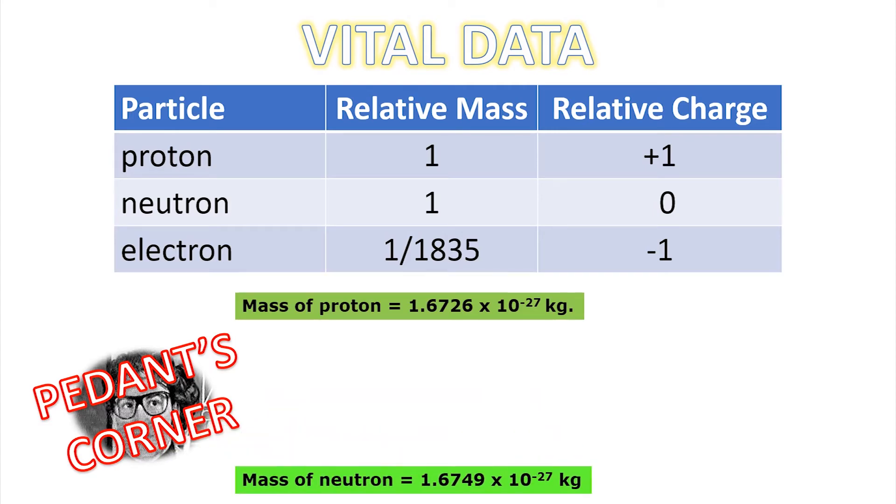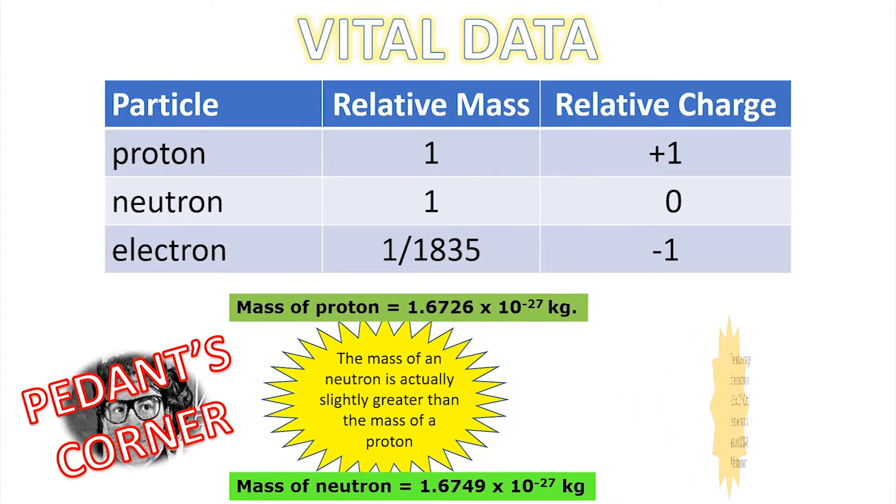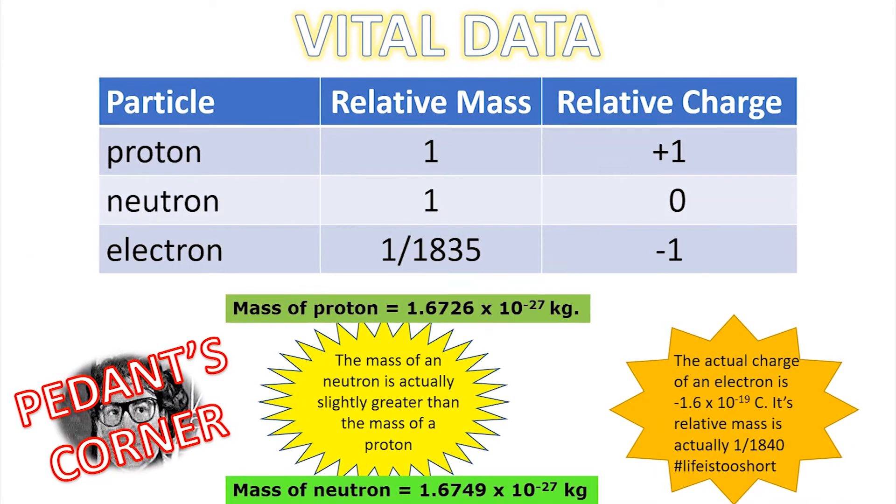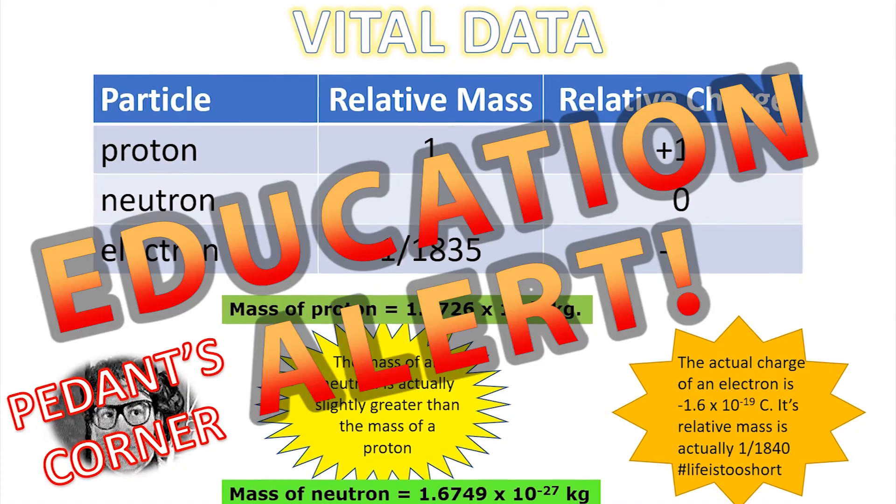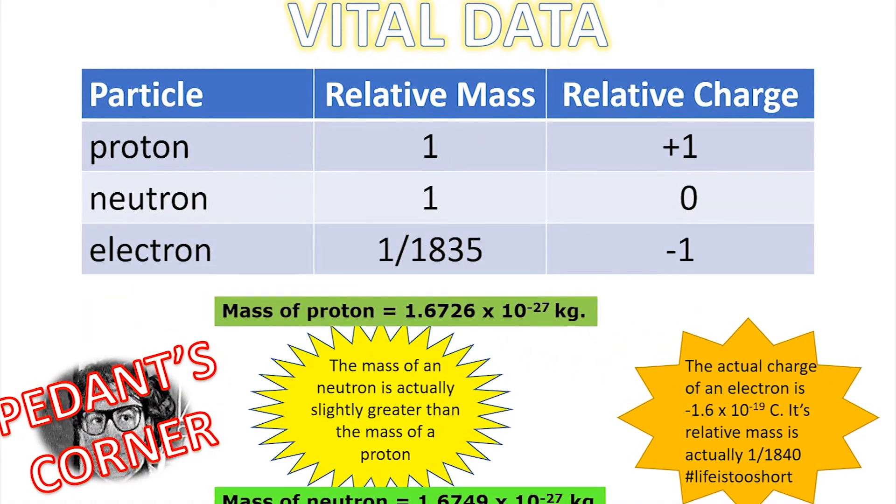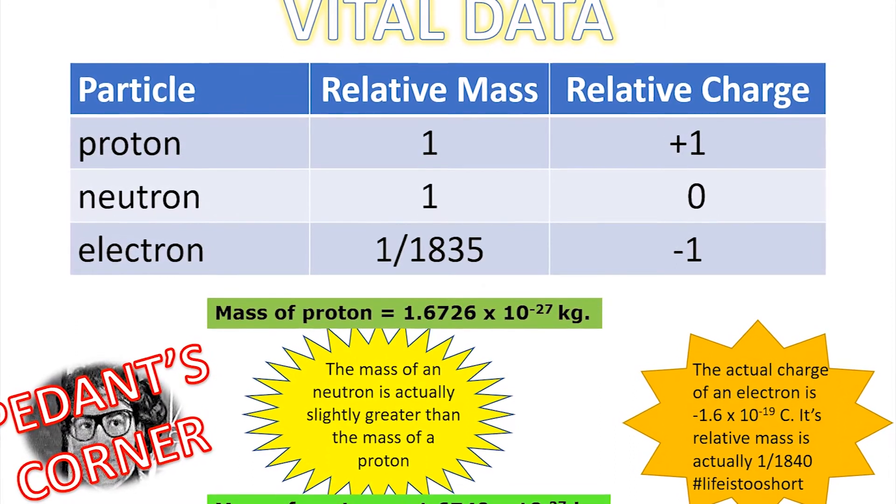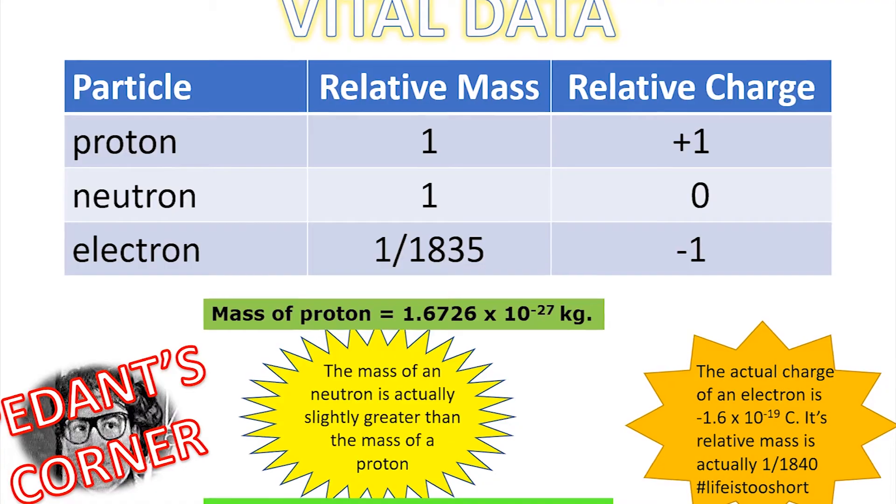Slightly different, yes? The neutron is actually slightly heavier. You don't need to know that for the GCSEs. This is just what we call education, rather than just telling you a load of lies. The charge of an electron is actually 1.6 times 10 to the minus 19 coulombs. That is the smallest charge possible for a particle to have which can exist independently in the universe.